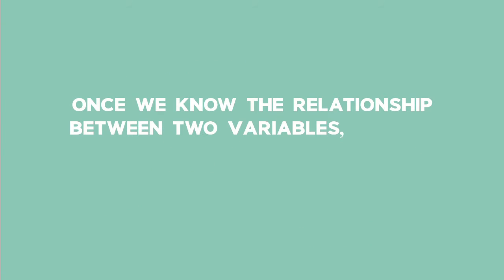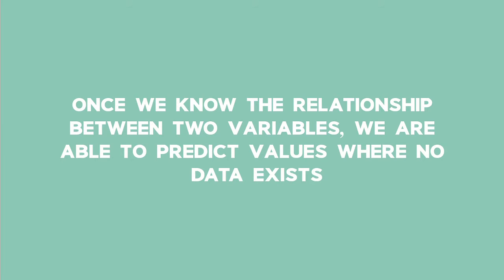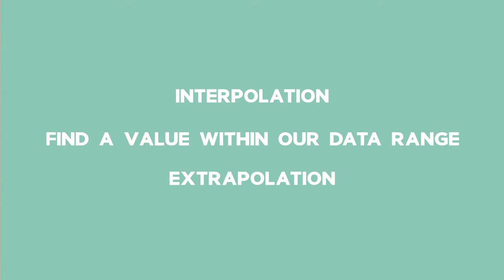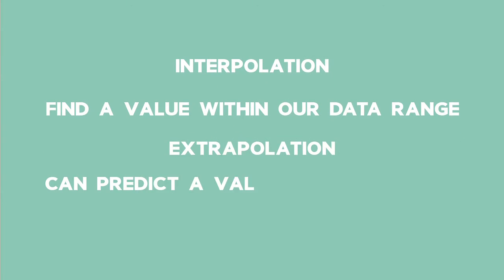Once we know the relationship between two variables, we are able to predict values where no data exists. Using interpolation, we can find a value within our data range. Using extrapolation, we can predict a value outside of our set of data points.